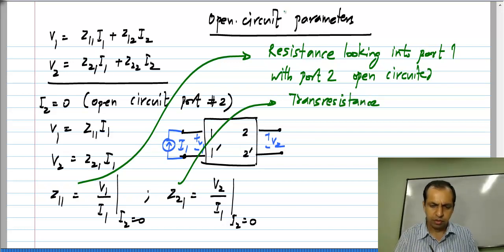Trans-resistance means it has dimensions of resistance, but the voltage and current are not measured at the same place. Current is applied to port 1 and voltage is measured at port 2.